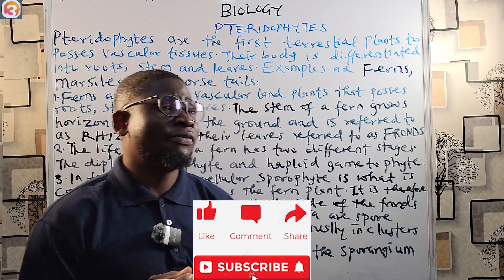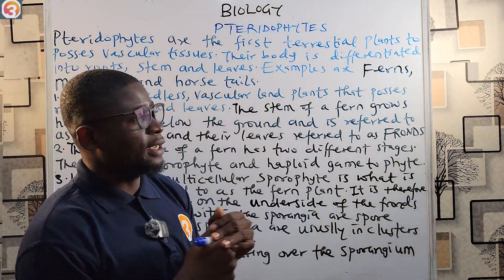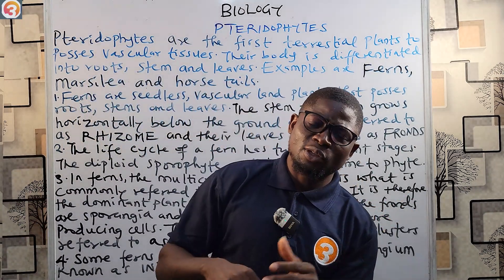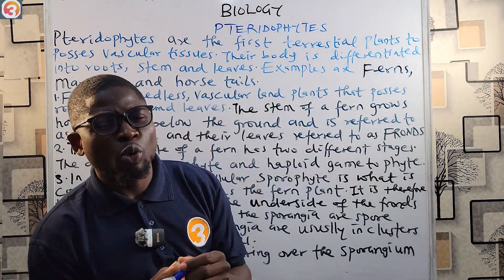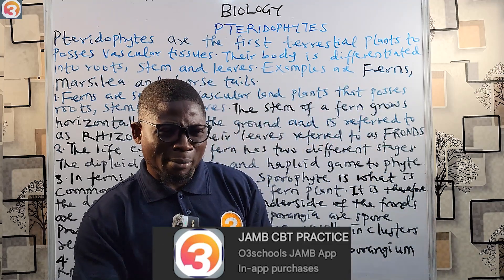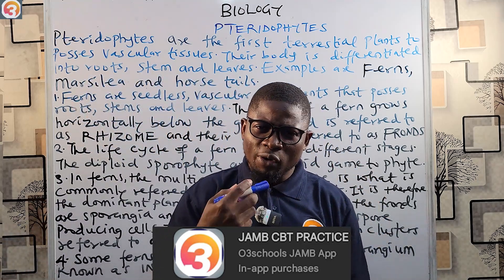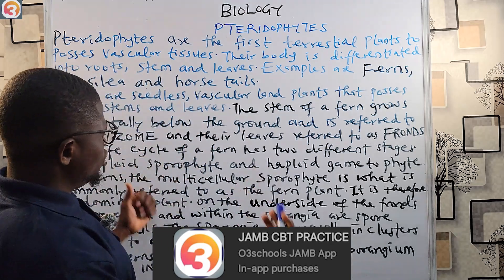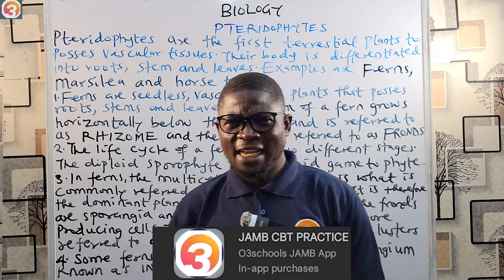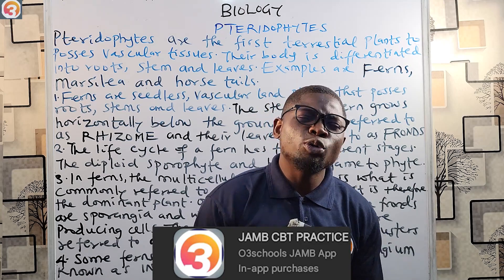Pteridophytes are one of the first and foremost terrestrial plants that have vascular tissues. After I've talked about pteridophytes, I'll take questions from the O3School Jam app to show you that you need to learn all these things. In biology, you need to read your notes over and over again.